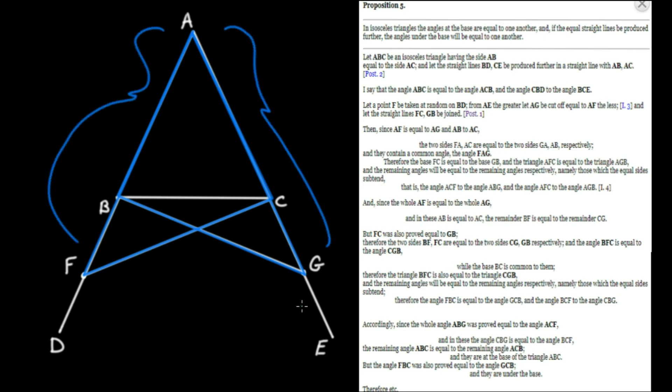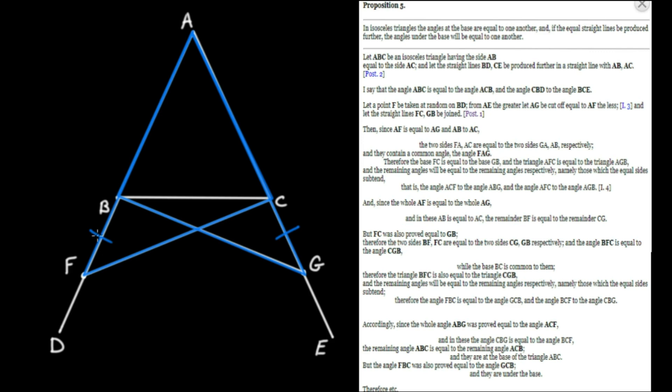Since the whole AF equals the whole AG, and AB equals AC (given, since isosceles triangle), the remainder BF equals the remainder CG. Equals subtracted from equals generate equals.